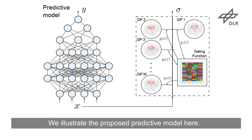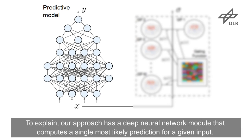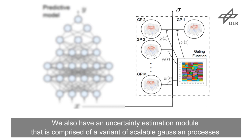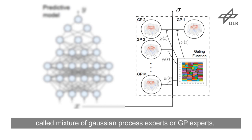We illustrate the proposed predictive model here. To explain, our approach has a deep neural network module that computes a single, most likely prediction for a given input. We also have an uncertainty estimation module that is comprised of a variant of scalable Gaussian processes, called mixtures of Gaussian process experts, or GP experts.